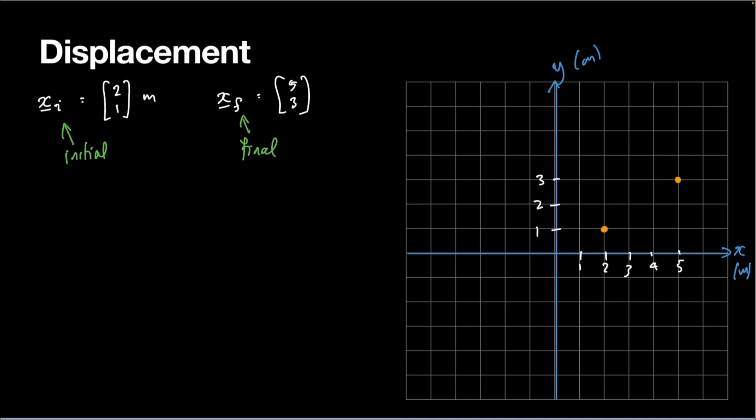So now we've got these two points, and when we talk about displacement, what we're talking about is essentially an arrow that starts at the beginning and ends at the final one. So this would be my initial point, xi, this will be my final point, xf. So you can see how the arrow goes basically across by 3 and up by 2. And this is what's called the displacement.